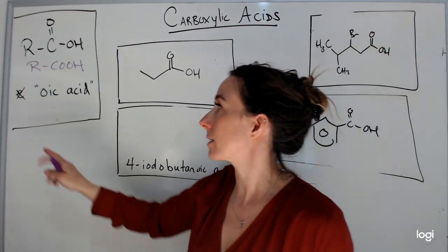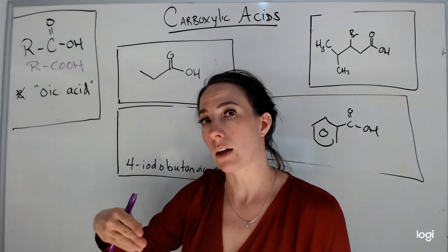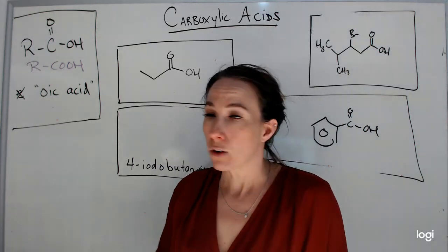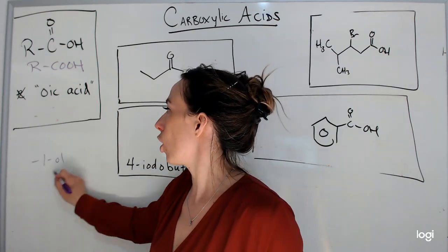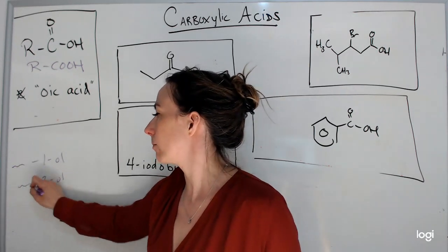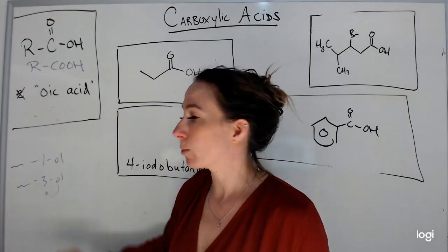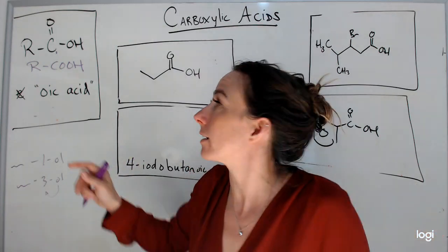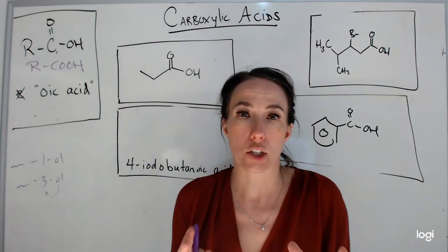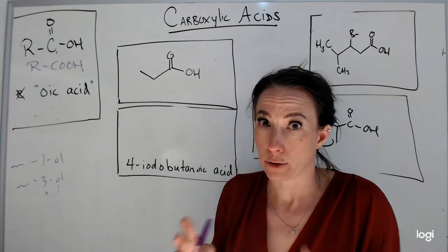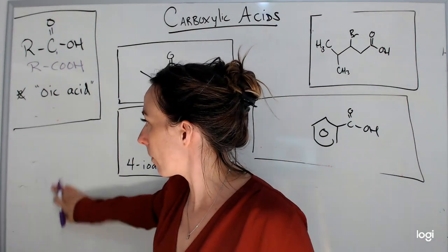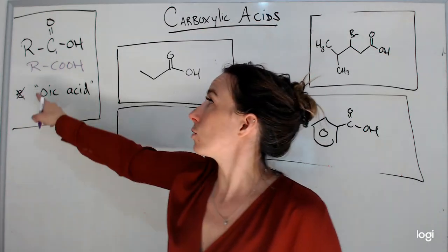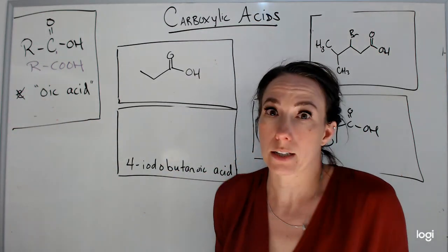When naming carboxylic acids, we're going to drop the -e at the end — just like we did for alcohols — and we're going to add -oic acid. For an alcohol, I might put 1-ol or 3-ol because the OH group could go anywhere. But here, this carbon is always going to be carbon one — it has to go at the end, since there are already four bonds to this carbon and it can't go in the middle. So there's no need to number it; it's always carbon one.